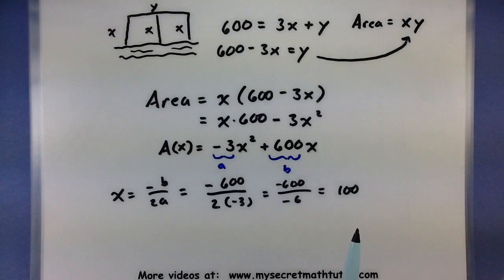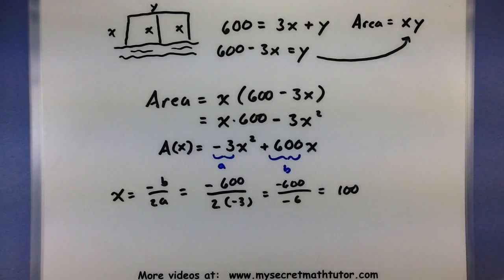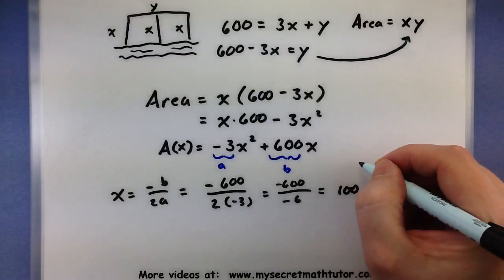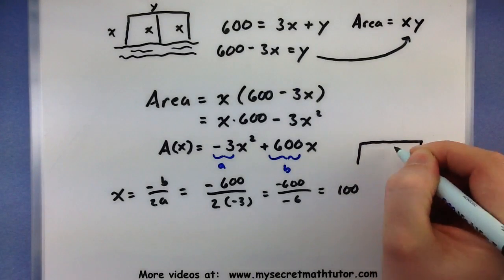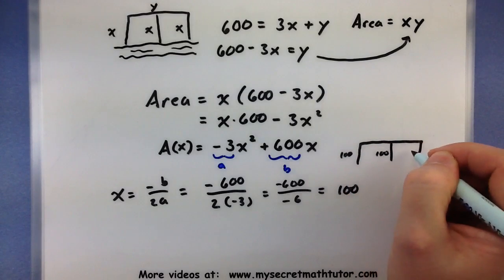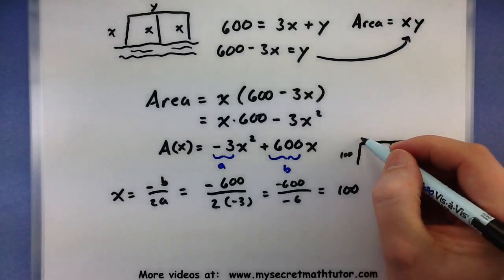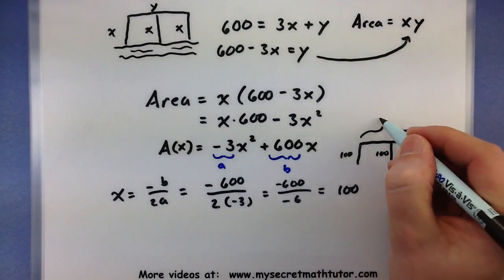So since I'm using x for the lengths of my small sides and it equals 100, it tells me that our fencing so far looks like this: we'll give each of these little short sides 100 each. And that will leave us 300 meters of fencing for the last side.